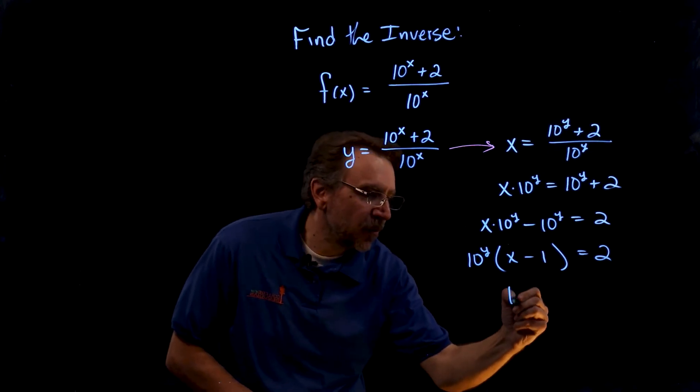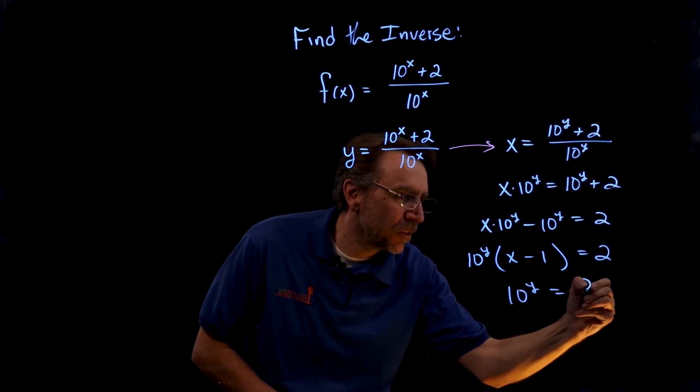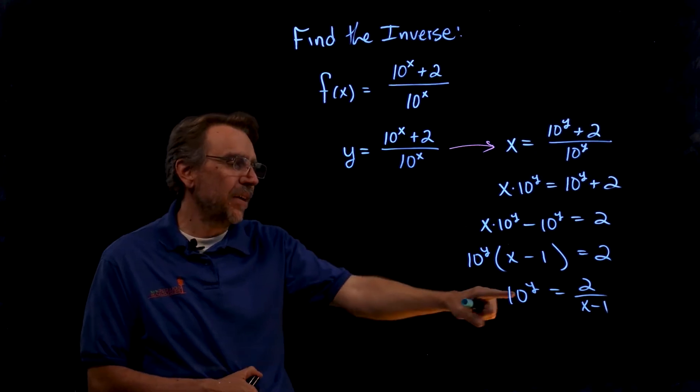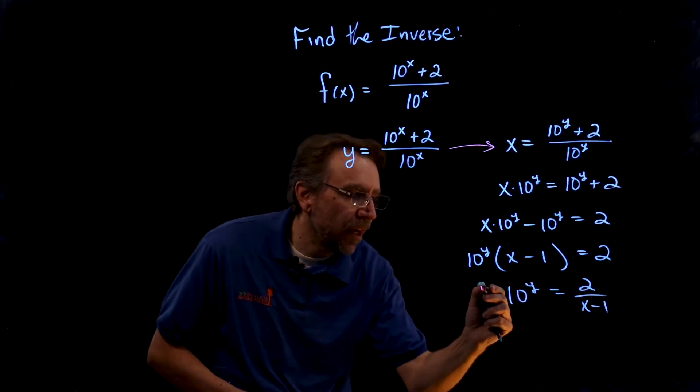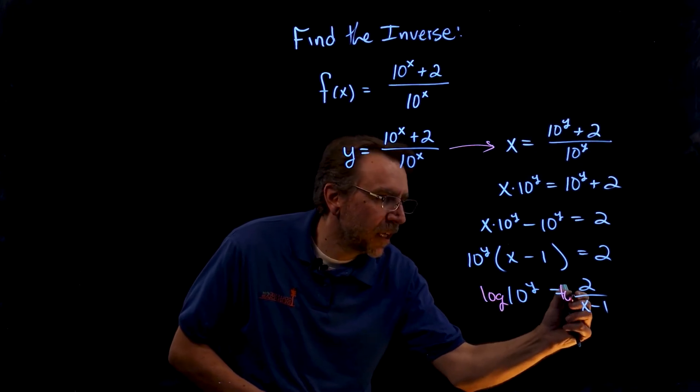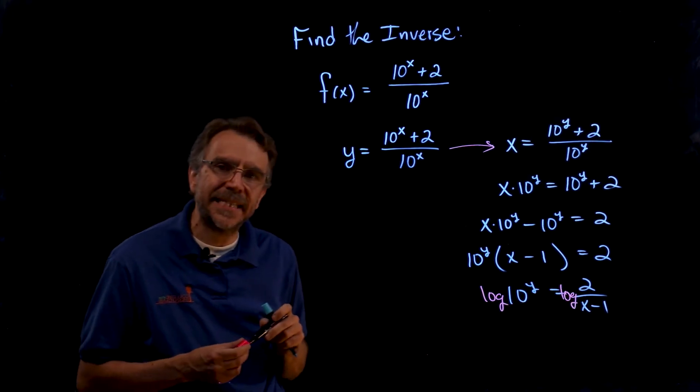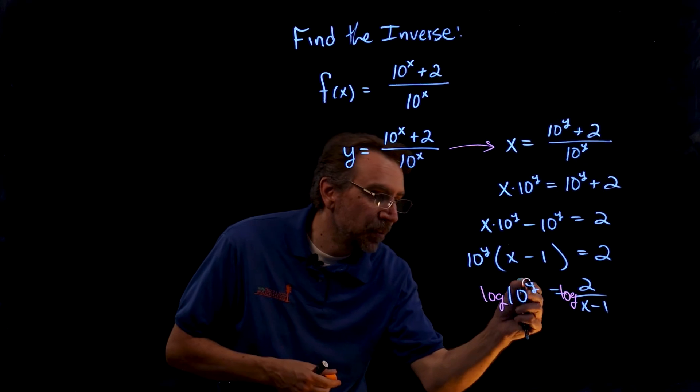Dividing by x minus 1, we have 10 to the y equals 2 over x minus 1. Now at this point I want to get the y down. To do that, I'll apply the common log to both sides. I chose the common log because that's a base 10, and doing that allows me to use the power rule.